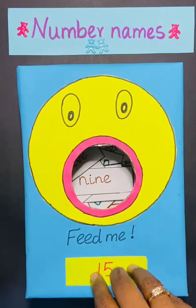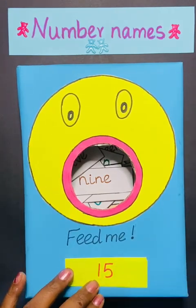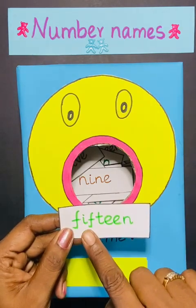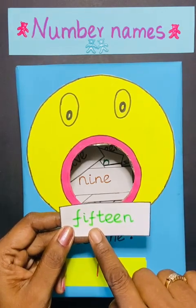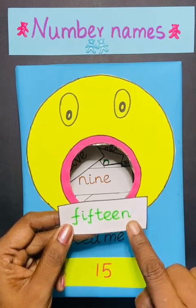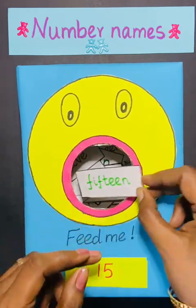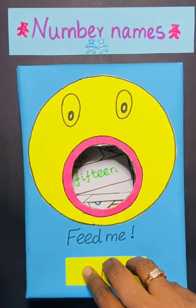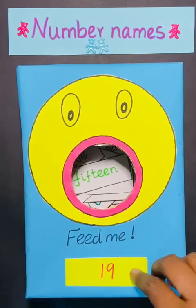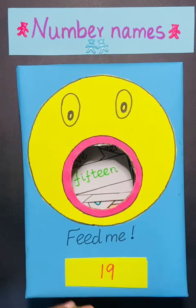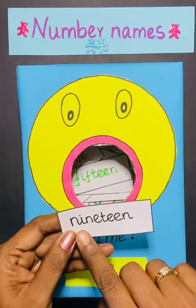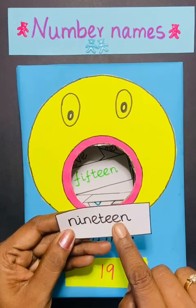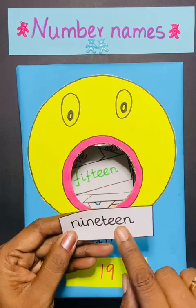Next number is 15. F-I-F-T-E-E-N. 15. Next number is 19. How to write 19? N-I-N-E. 9 you know. Then T-E-E-N. Teen. 19.